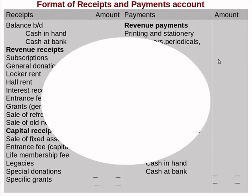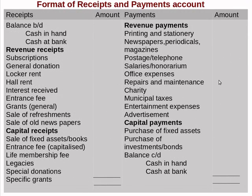This is the format of the receipt and payment account. The debit side is the receipt side, and the credit side is the payment side. On the debit side, the first entry is the opening balance — balance brought forward — which includes cash in hand and cash at bank.